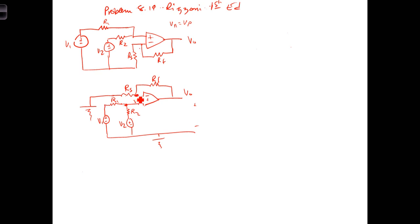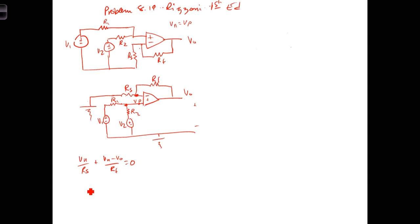We'll analyze this circuit by writing a node equation at the inverting terminal, first in terms of V sub N. The current leaving this node toward ground is V sub N over R sub S, and the current leaving toward the output is V sub N minus V out over R sub F. Since current into the inverting terminal is zero, the sum equals zero. Solving for V out gives V out equals V sub N times (R sub F over R sub S plus 1), which we recognize as the non-inverting amplifier gain.